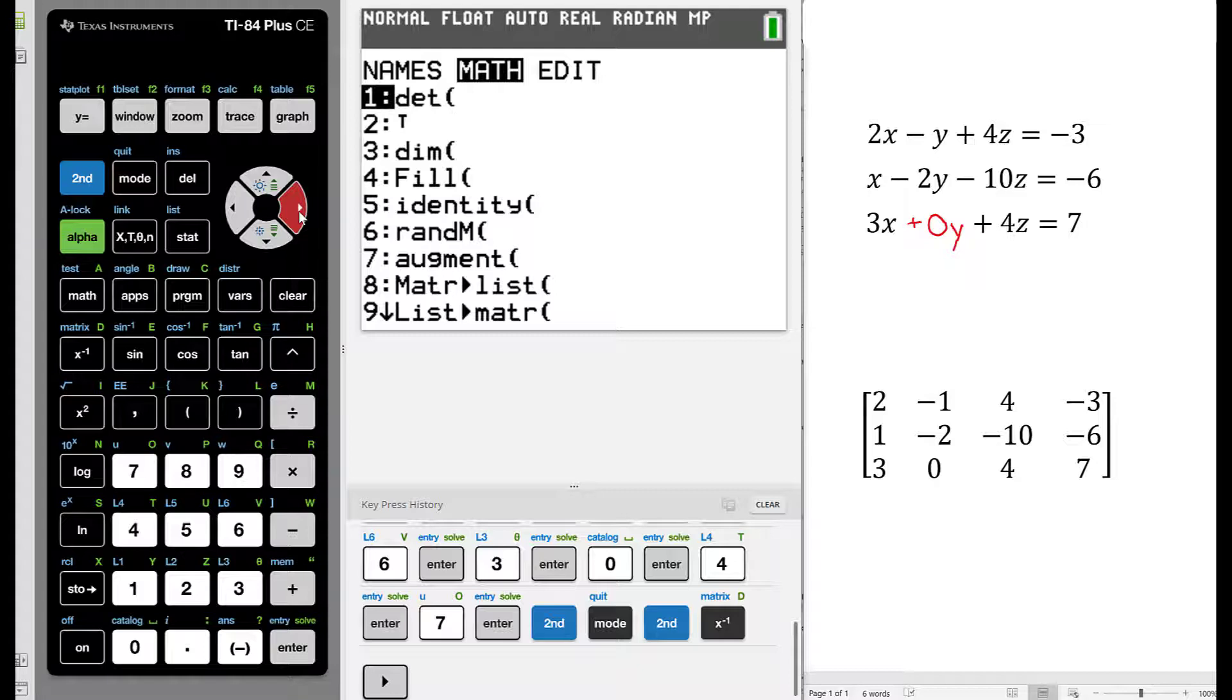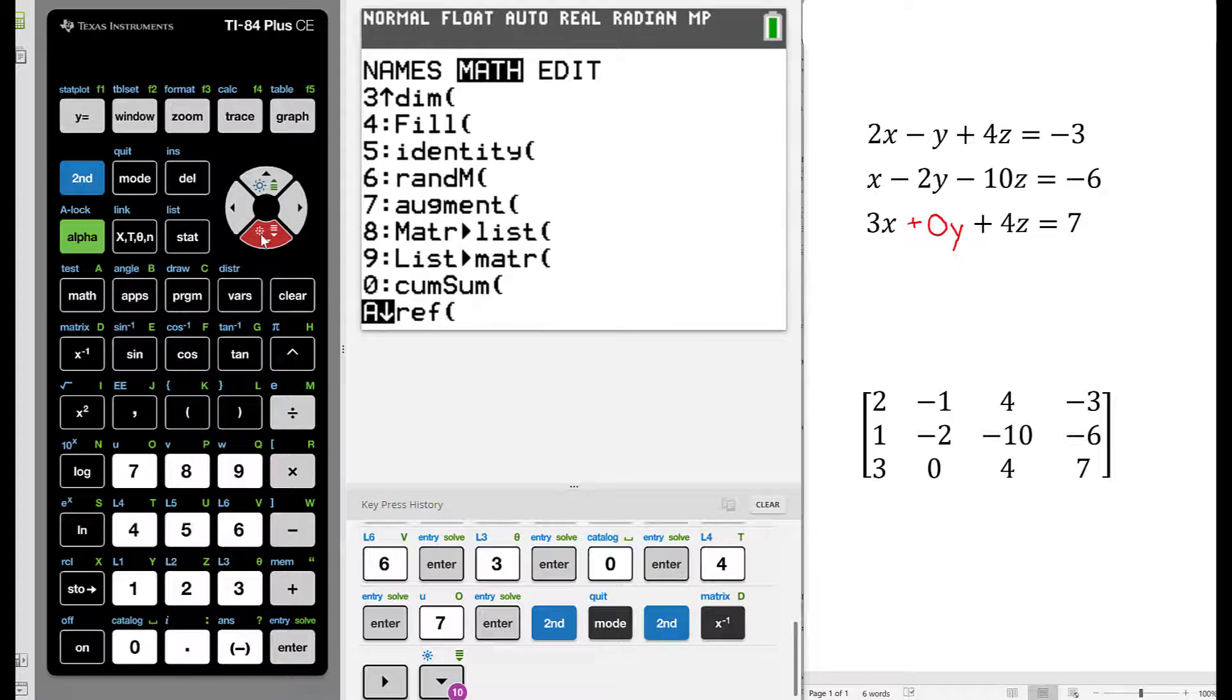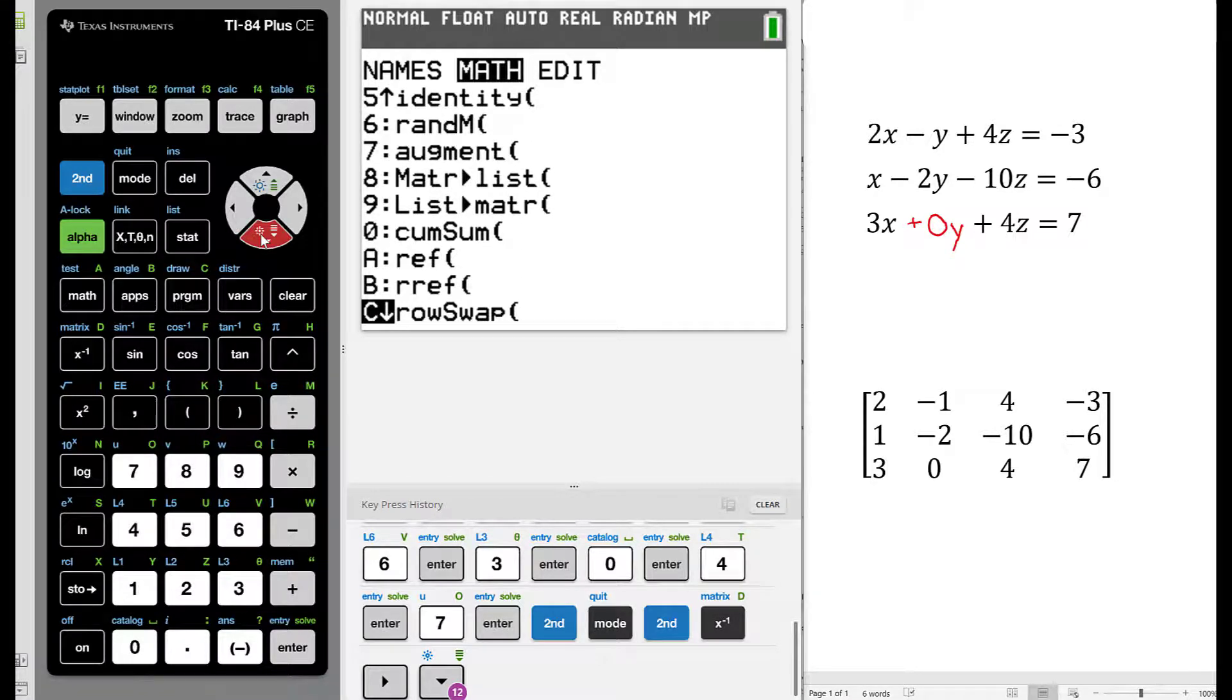We're going to go down until we find the option that says RREF, which stands for Reduced Row Echelon Form. It's on the letter B, and we'll press enter once we have the cursor land on the letter B.